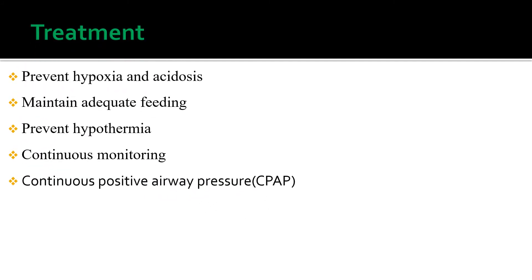Regarding treatment of respiratory distress syndrome, the basic defect requiring treatment is inadequate pulmonary oxygen-carbon dioxide exchange. Basic supportive care including thermoregulation, circulatory, fluid, electrolyte, and respiratory support is essential while functional residual capacity is established and maintained. Careful and frequent monitoring of heart and respiratory rate, oxygen saturation, partial pressure of oxygen, partial pressure of carbon dioxide, pH, electrolytes, glucose, hematocrit, blood pressure, and temperature are all essential.